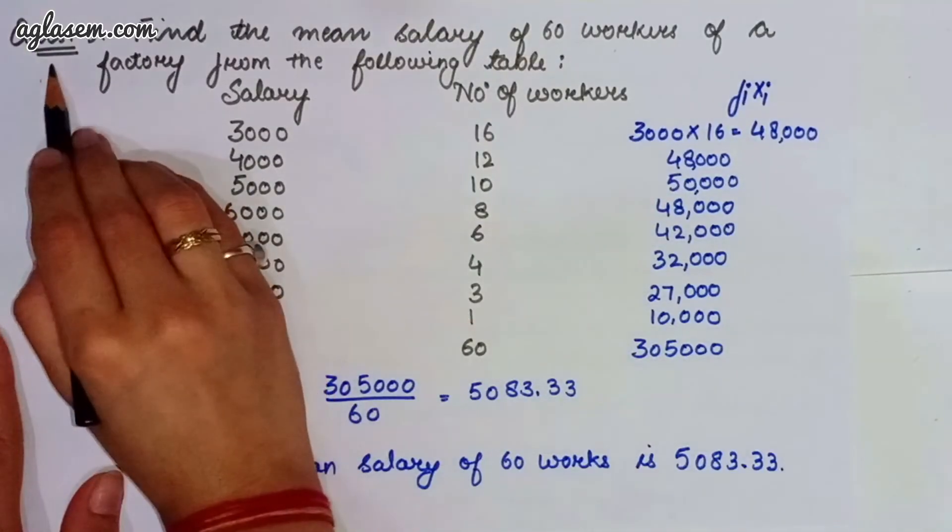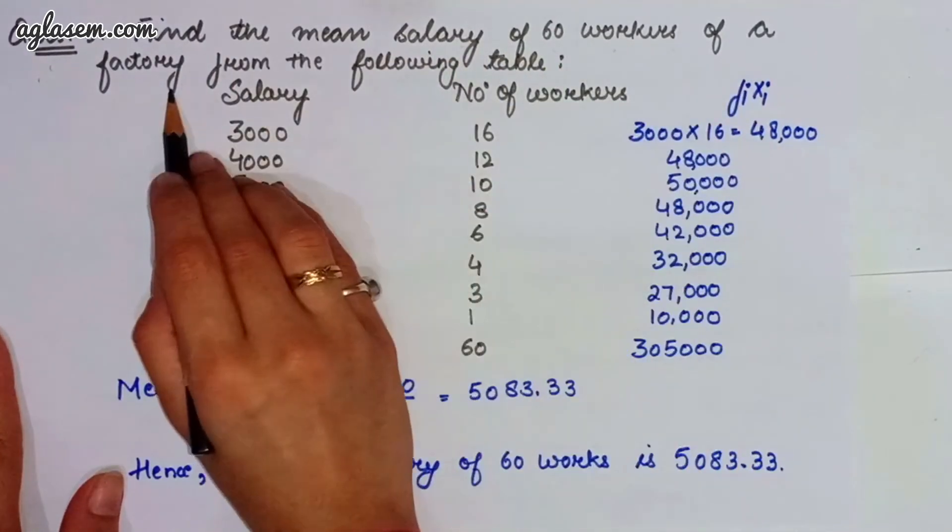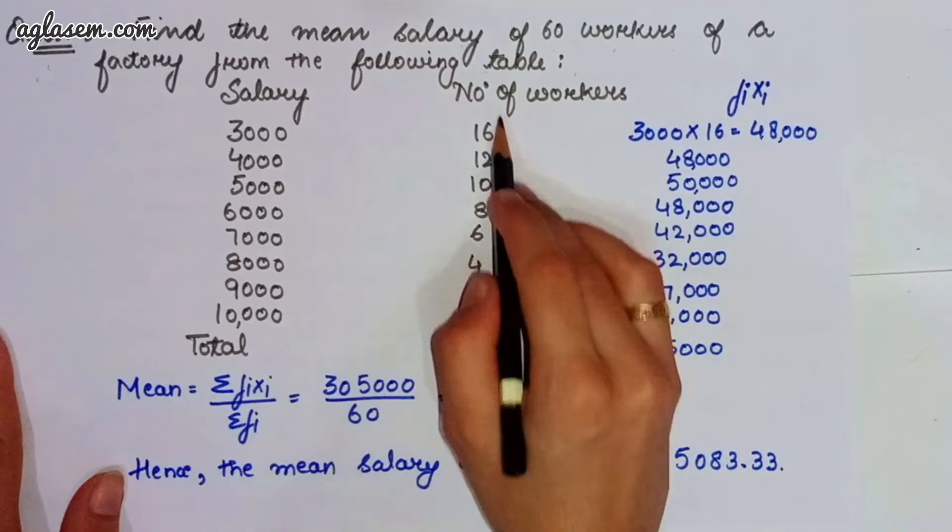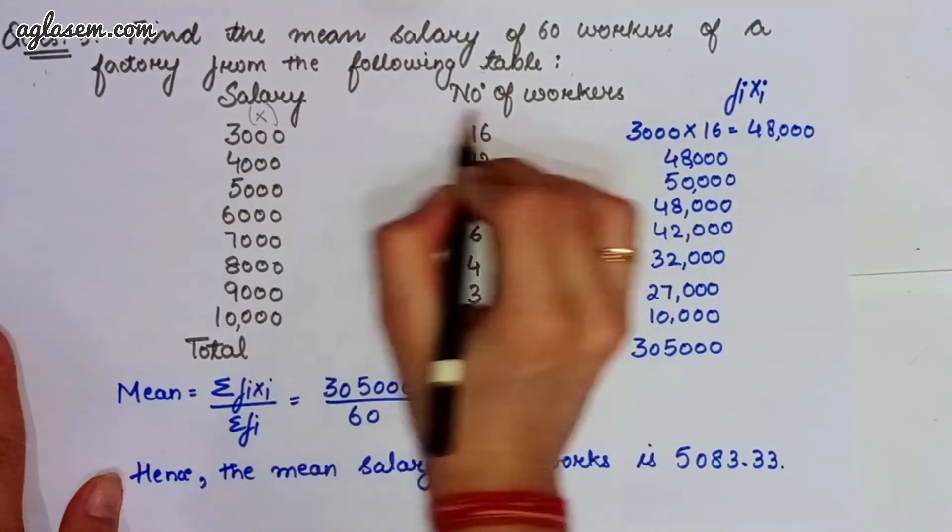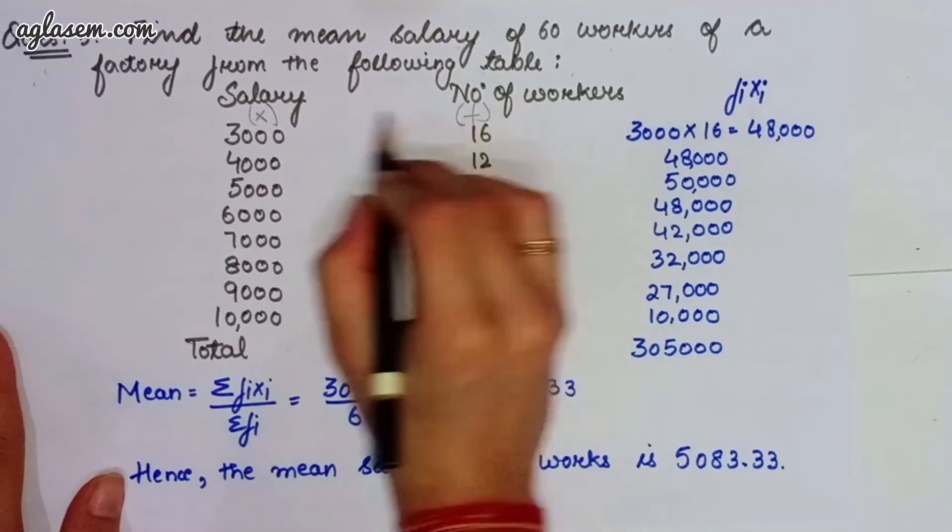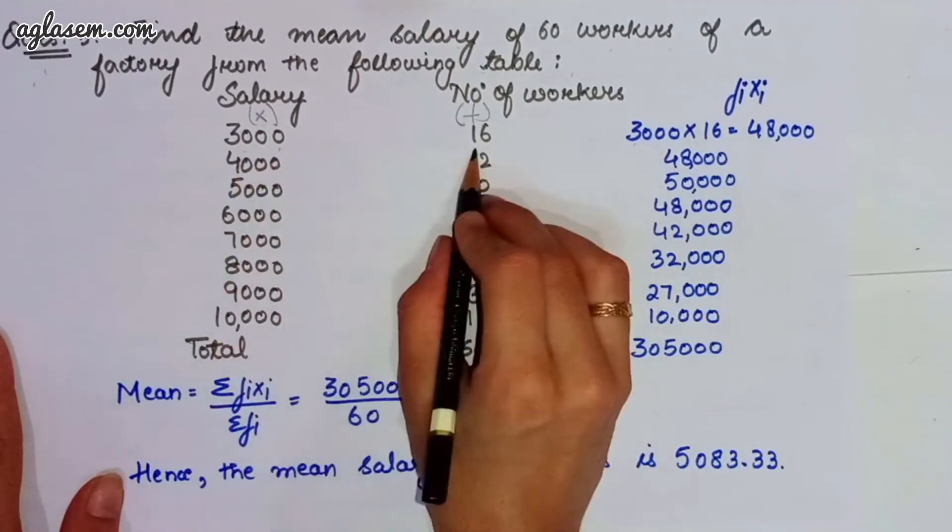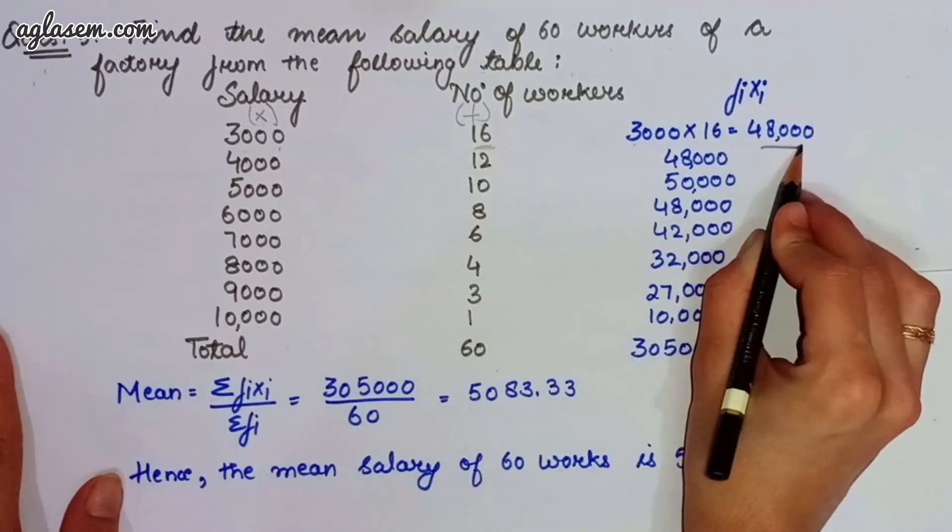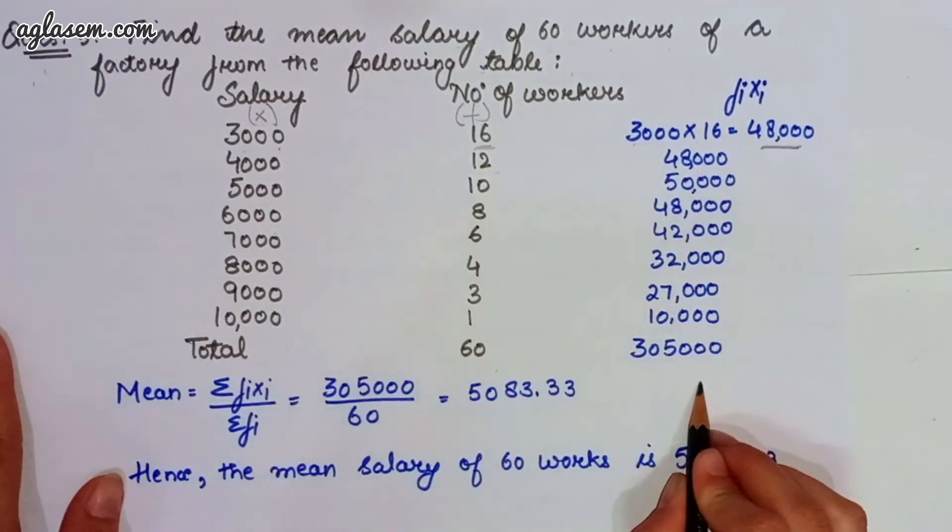Further, moving to question number 5, which says, find the mean salary of 60 workers of the factory from the following table. Salary is given, number of workers is given. So, letting it as x and this is as f, we can multiply f into x, which will give you, that is 3000 multiplied by 16, will give you 48,000. So, again, multiplying this and solving, we will get f into x.